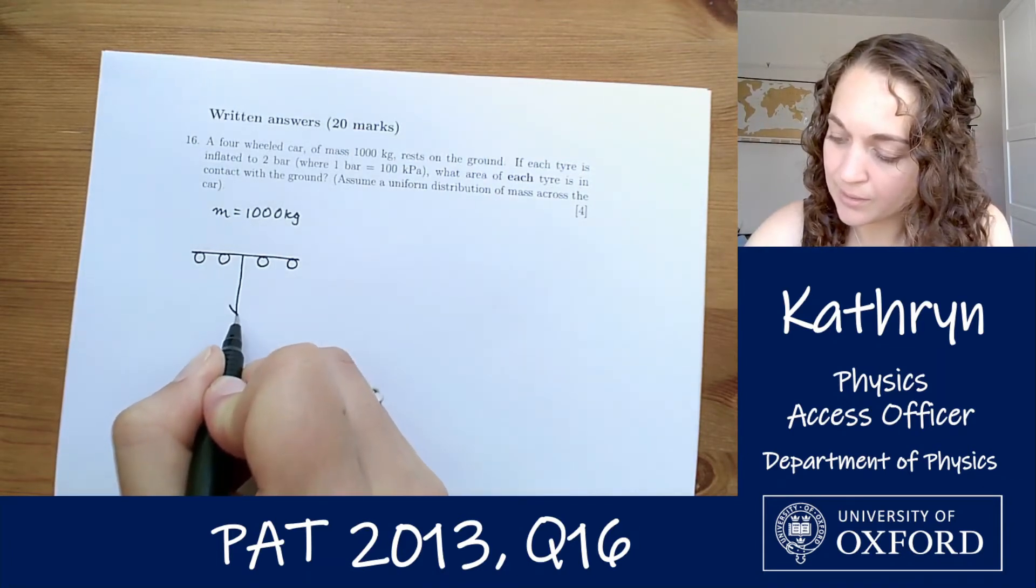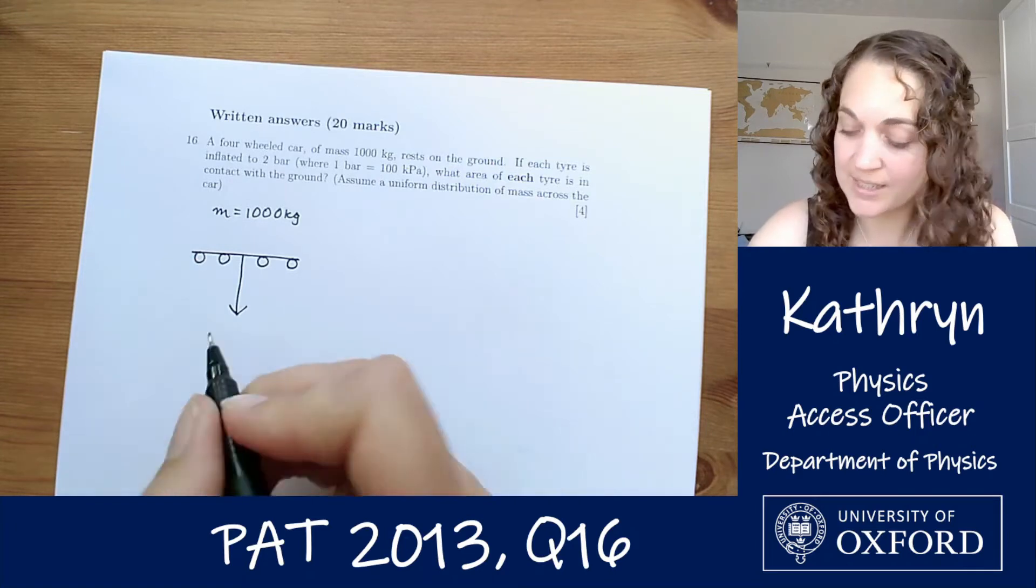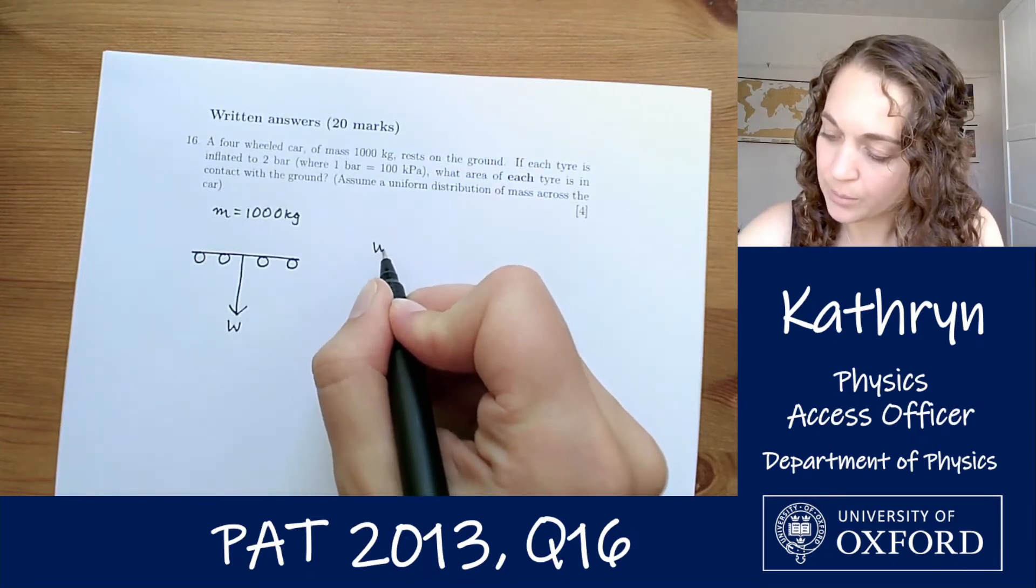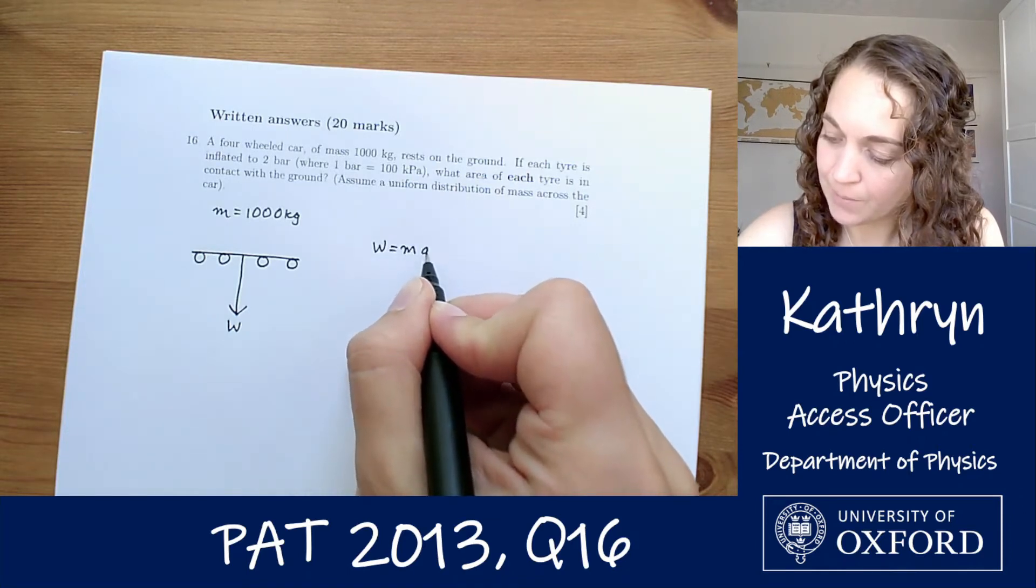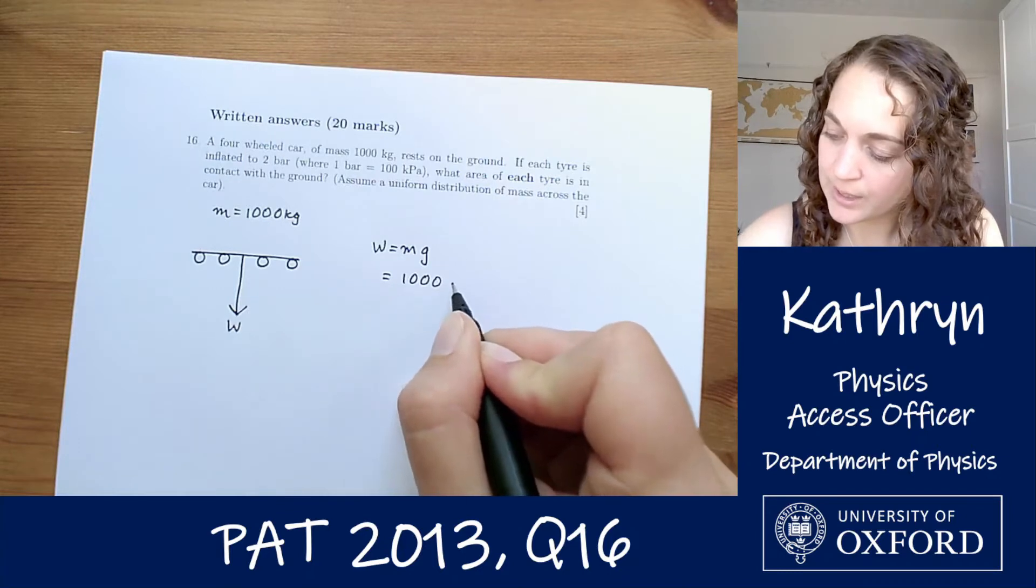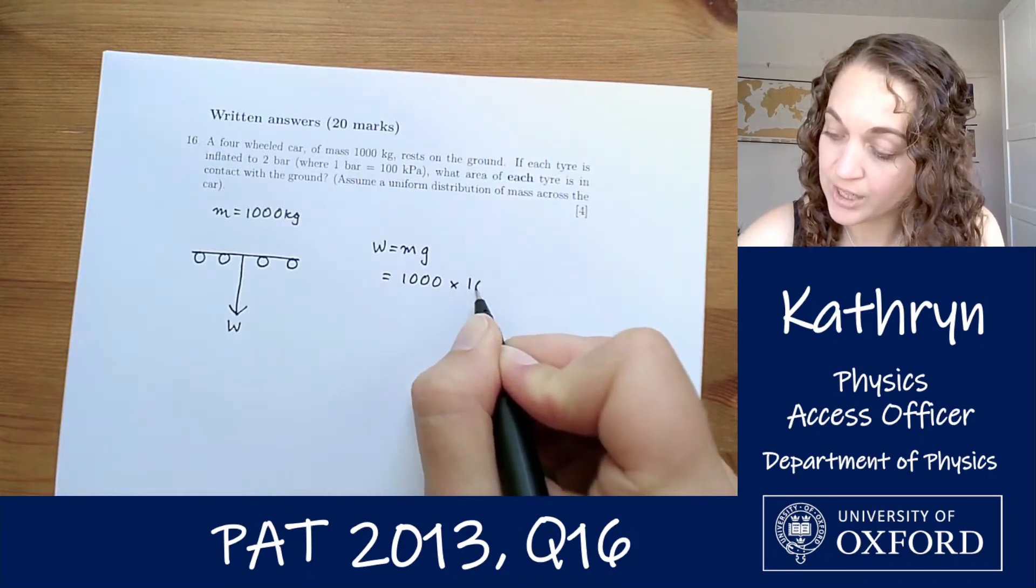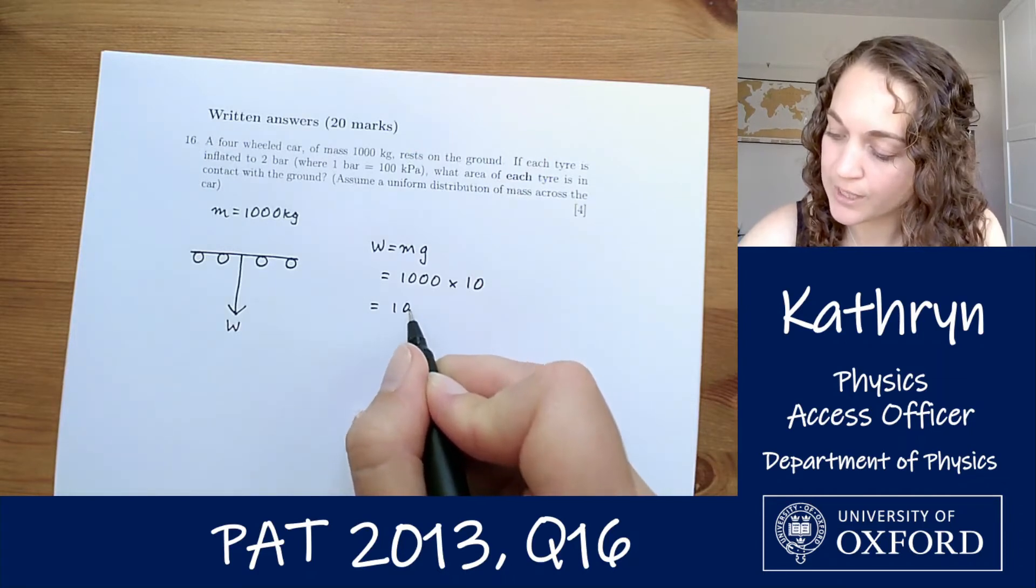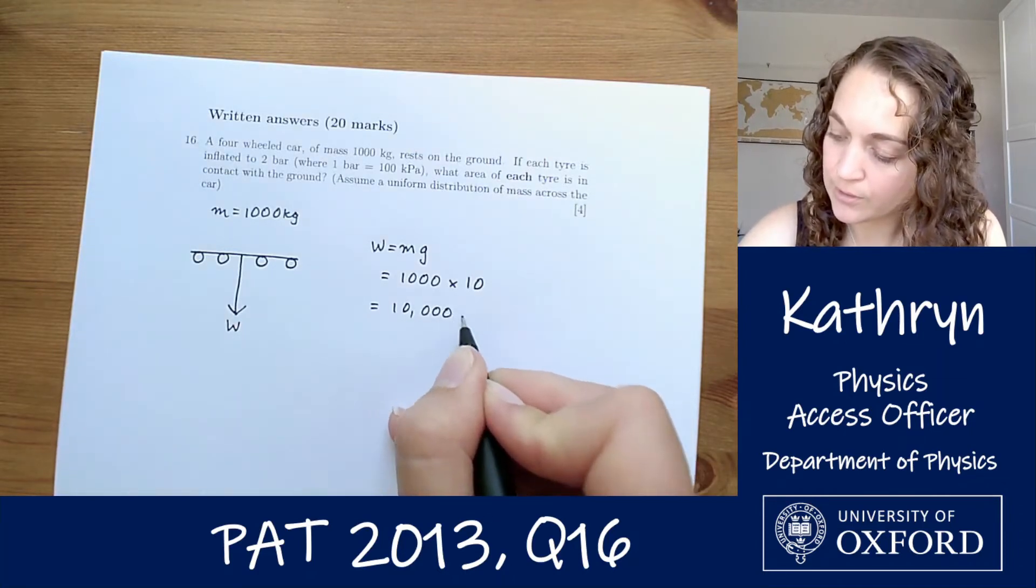So it's weight, the force acting downwards, W, we're going to do W equals MG. The weight is going to be 1000 kilograms times, we'll say, G equals 10 to give us a total force downwards of 10,000 newtons.